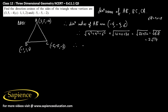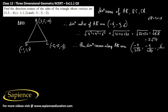Therefore, the direction cosines along side AB are: minus 4 by 2 root 17, minus 4 by 2 root 17, and 6 by 2 root 17. Simplifying, that will be minus 2 by root 17, minus 2 by root 17, and 3 by root 17.